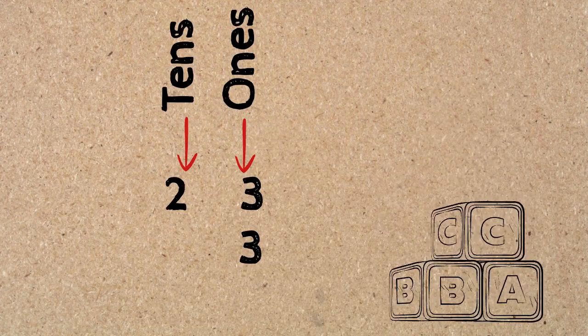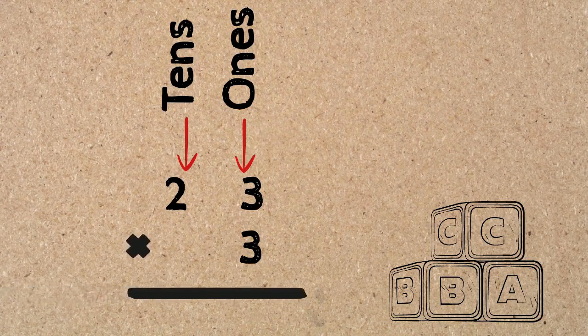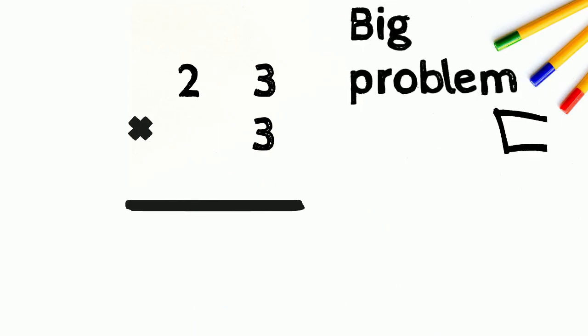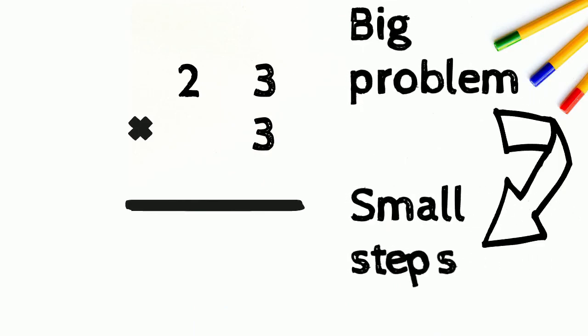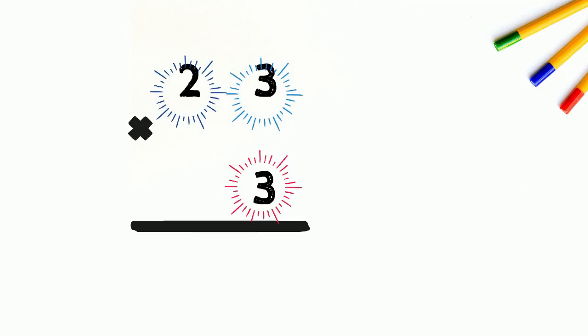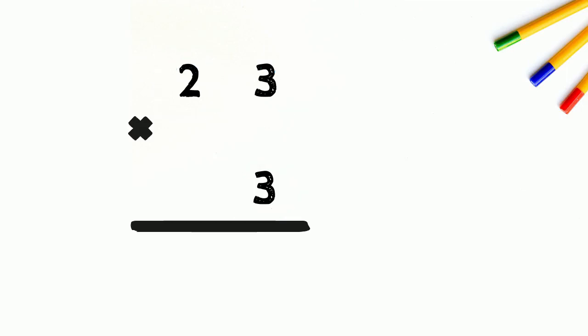When we finish, we draw a line right underneath to write our answers and we put a multiplication sign on the side to show that we're multiplying. Now we're going to break up our bigger multiplication problem into smaller multiplication problems. Those small steps involve multiplying the bottom digit by each of the digits on the top number. Since our top number has only two digits, our problem is going to have two small steps.